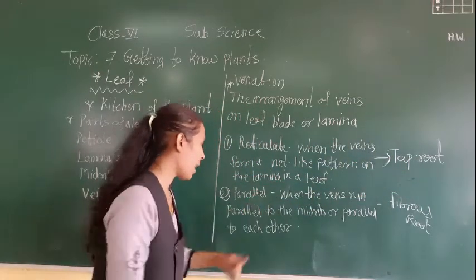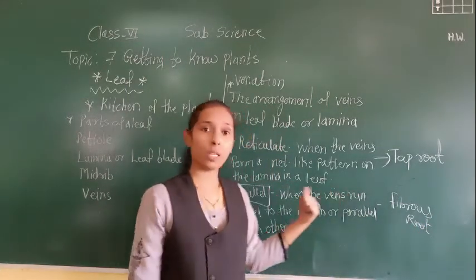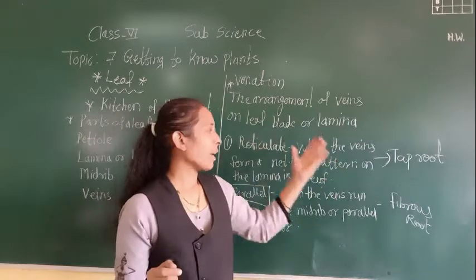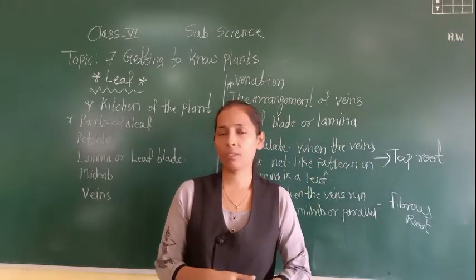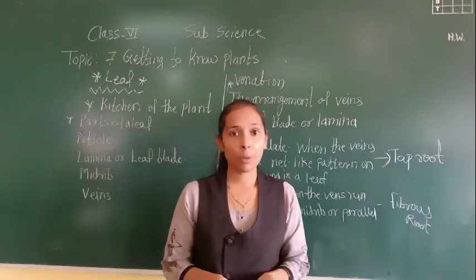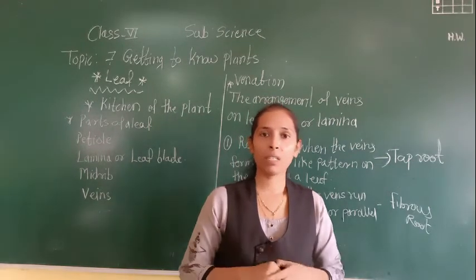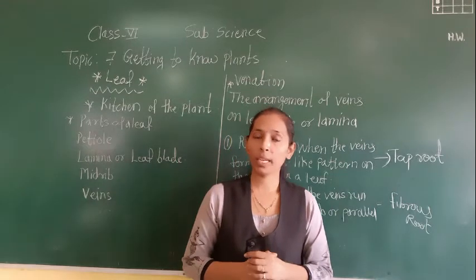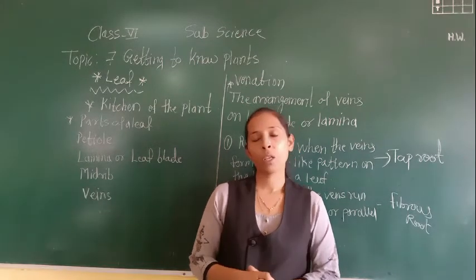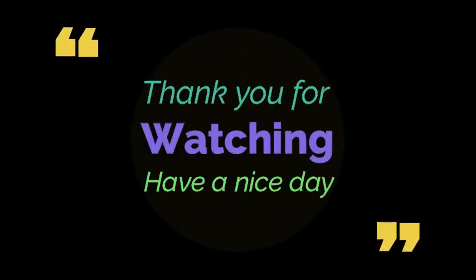For example, mango and cashew nuts have taproots and reticulate venation. So this is all about today's lesson. For homework, you have to draw the diagram of the parts of a leaf in your science notebook — the diagram is on page 71, figure 7.70. We will stop here and meet in the next video with the next point. Thank you.